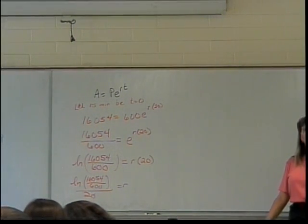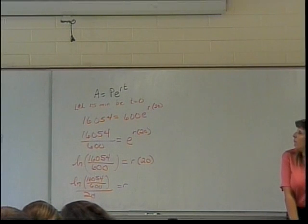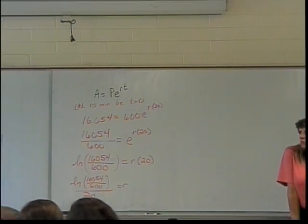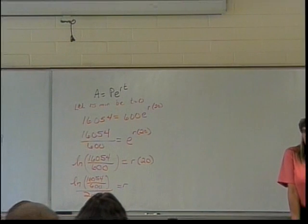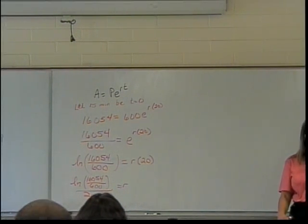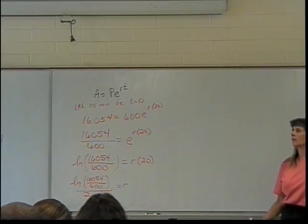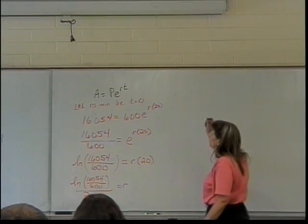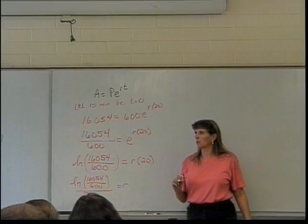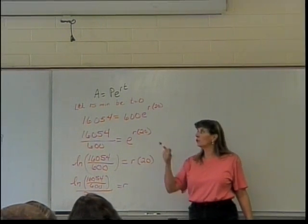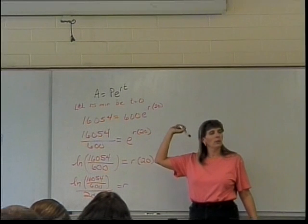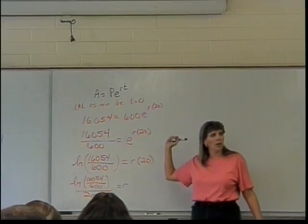Now I want to find out how many bacteria I started with. Suggestions? Is A equal to 600? Do I have to use the 600 data point? No — I could use either one: the 600 at t equals 0, or I could use the 16,054.